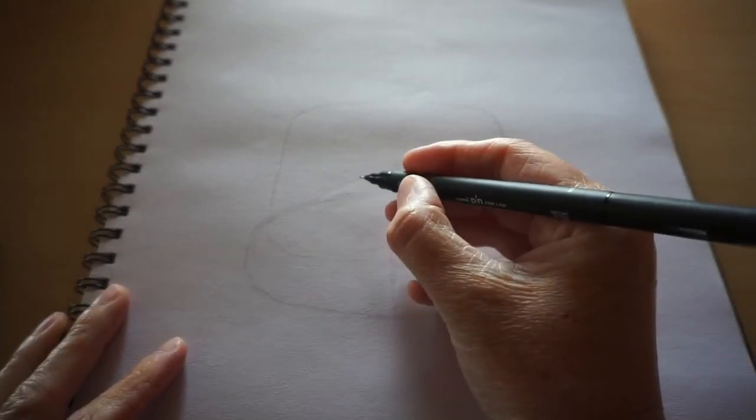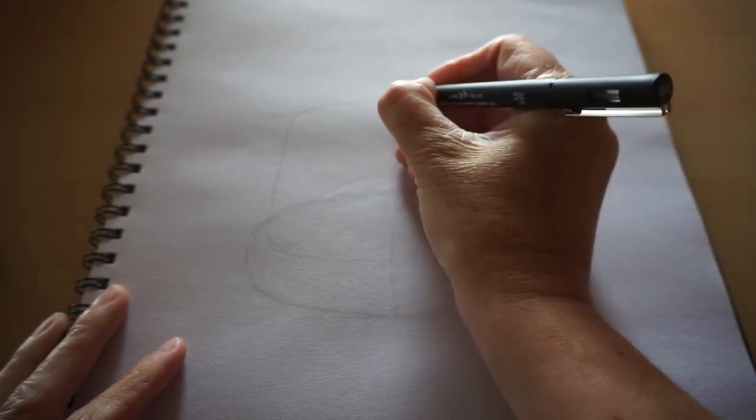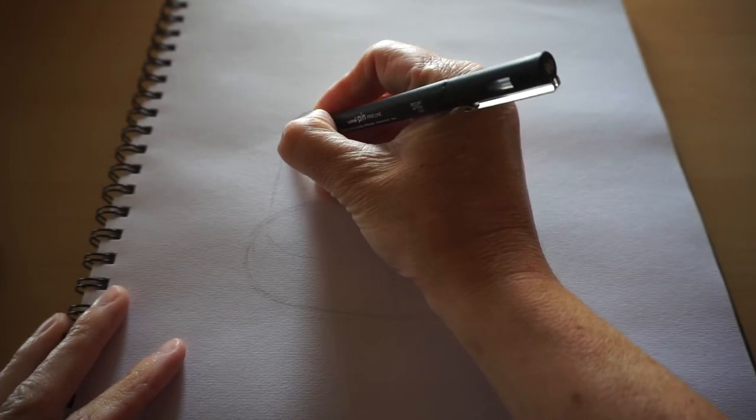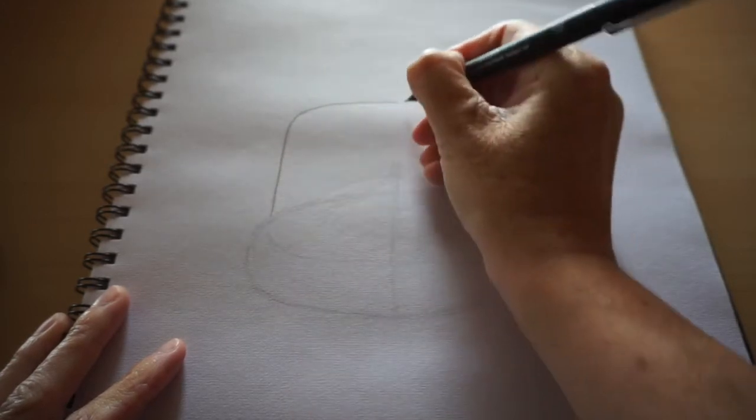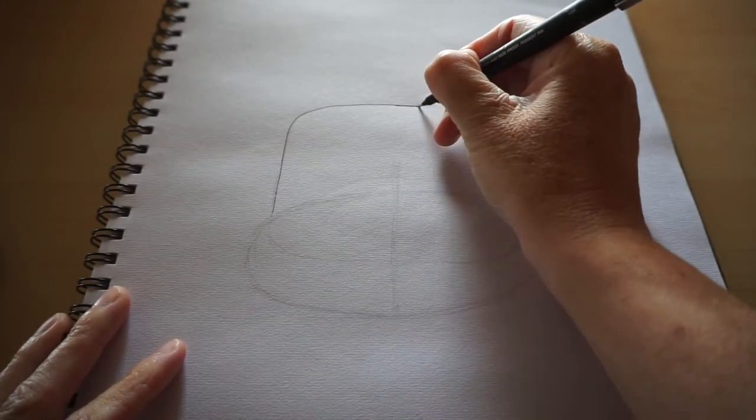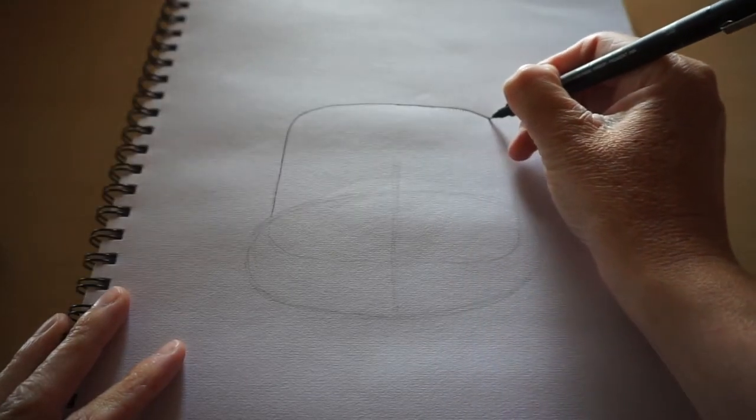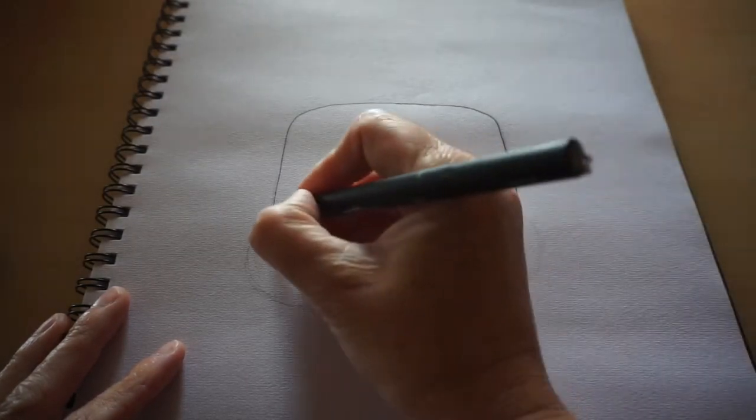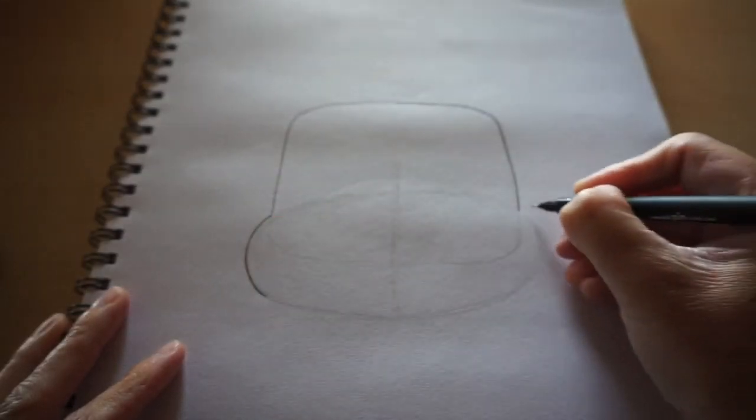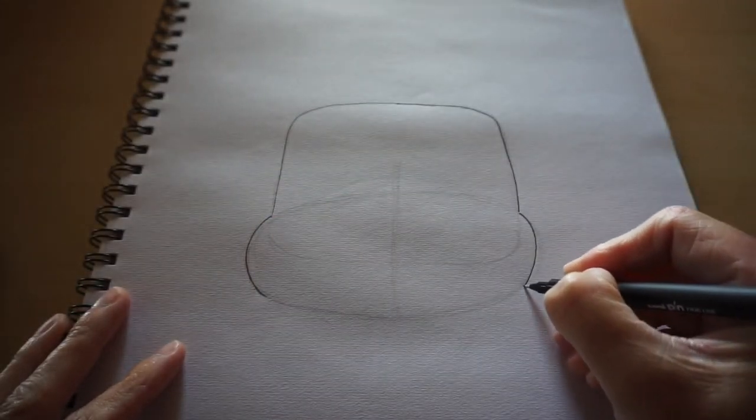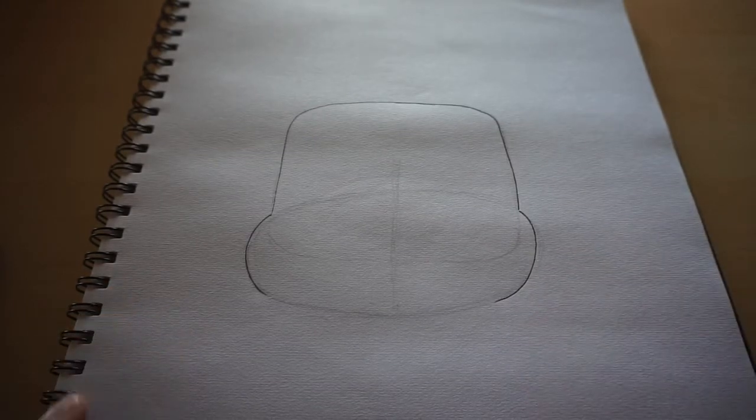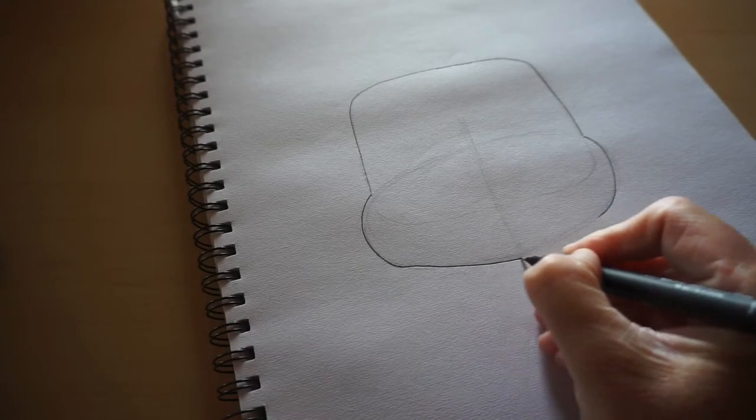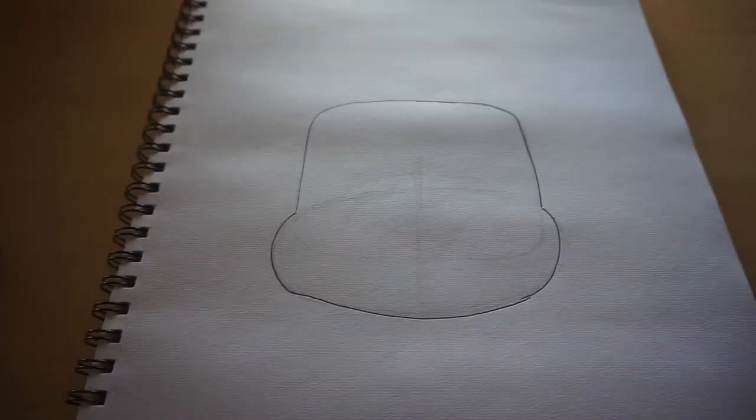cute Eeyore. So first things first, we're going to come around here and then along here like so, and then we're going to come around where the oval was or is, like so, and join it up. I'm just going to move the page. It's a bit awkward for me to see what I'm doing. Okay, so